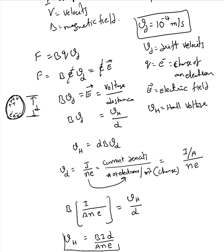So V_H = BID / (ANE), where A is the area, E is the charge of the electron, N is the number of electrons per volume, I is the current, B is the magnetic field, and D is the diameter for a round conductor. If you take a square conductor, some quantities cancel and you end up with V_H = IB / (thickness × N × E).